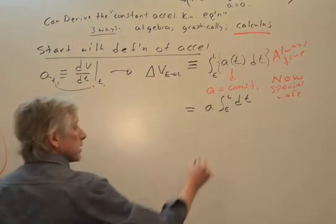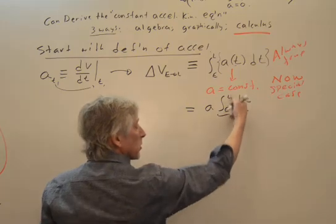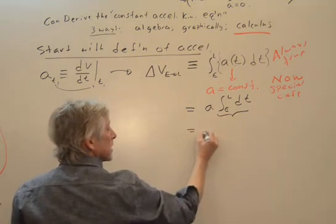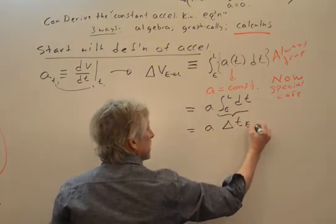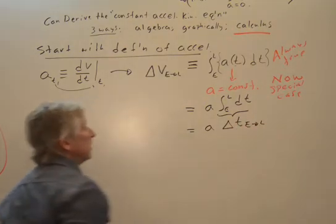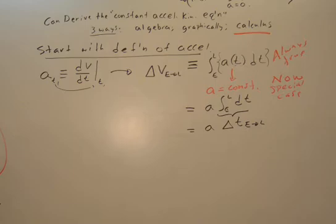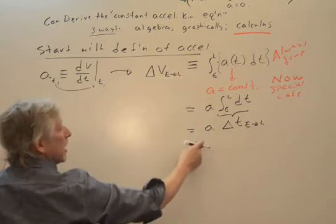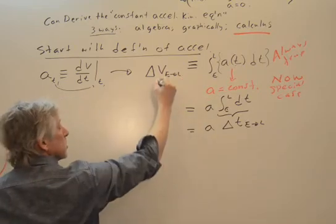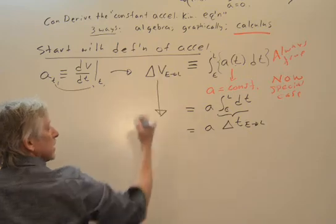Now you should know this, that when you sum up the time from earlier to later, all that is is delta t earlier to later. So it's that simple. Start here with something that will always work. Now do something that's a very special case, but used a ton.